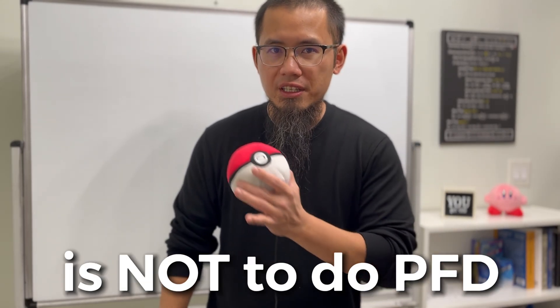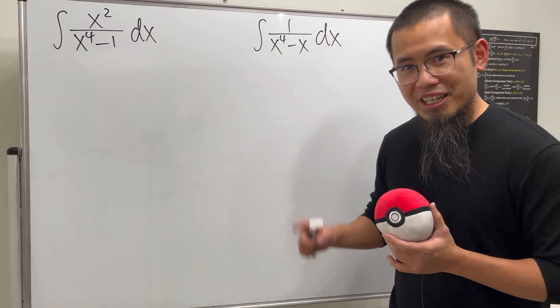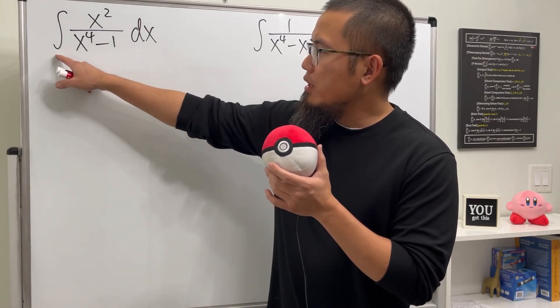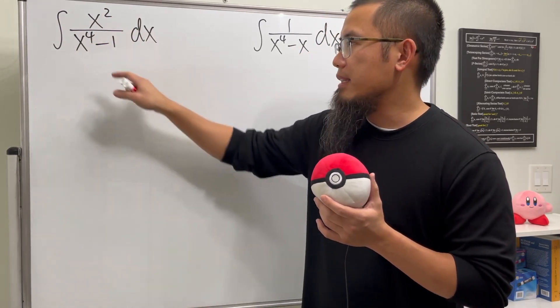The best way to do partial fractions is not to do partial fractions. Check this out. For the first one, we have to integrate x² over x⁴ - 1.